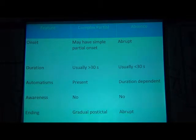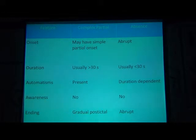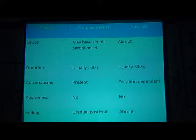How do we differentiate between complex partial seizure and absence seizure? In complex partial seizure, onset may have a simple partial onset; absence seizure has an abrupt onset. Duration is more than 30 seconds in complex partial, and less than 30 seconds in absence seizure. Automatisms are common with complex partial seizure and are duration-dependent in absence seizures, though automatisms can occur in absence seizures too. Awareness is lost in both. Ending is gradual with post-ictal drowsiness in complex partial, and abrupt with no post-ictal state in absence seizures.